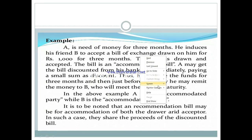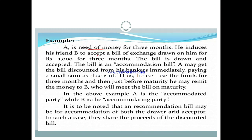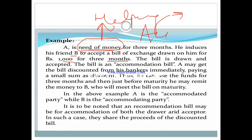For example, there is party A who is in need of money. A goes to his friend B to accept a bill drawn for rupees 1000 for three months. B is helping A — that is an accommodation bill. A will take the bill, get it discounted, and take the amount. A is the accommodated party and B is the accommodating party because B is helping.